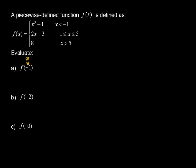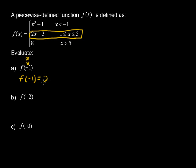Which of these pieces is where x equals negative 1? It's the middle one, and we're not going to have a contradiction, because the first piece requires x to be strictly less than negative 1, and here x equals negative 1. So f(−1) equals 2 times negative 1 minus 3, which equals negative 2 minus 3, or negative 5.